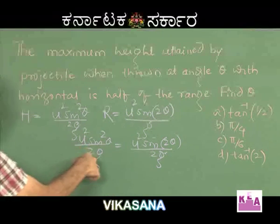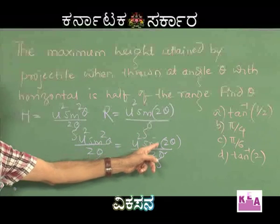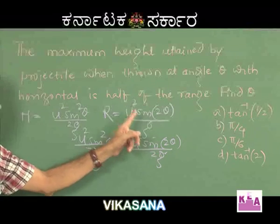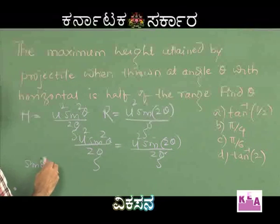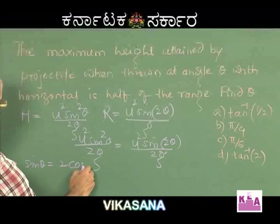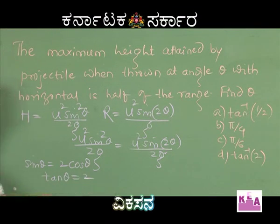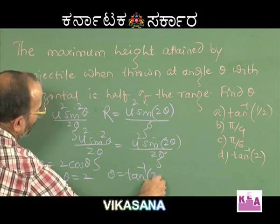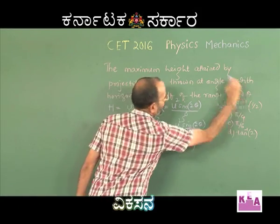Simplifying: 2g cancels, u² cancels. From sin²θ, cancel one sinθ with the sinθ in the expansion of sin 2θ = 2 sinθ cosθ. What remains is sinθ = 2 cosθ, which gives tan θ = 2, and therefore θ = tan⁻¹(2). That makes option A perfectly correct.